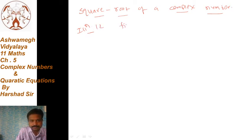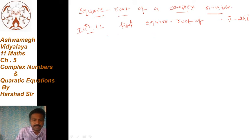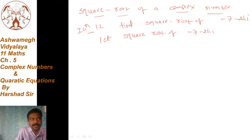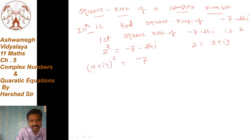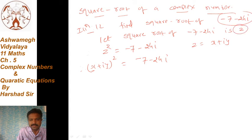Find the square root of (-7 - 24i). दोस्तों, let's consider: √(-7 - 24i) = z. तो इसका मतलब होगा कि z² = -7 - 24i. What is z? Let's consider z is any complex number: z = x + iy. So here z is replaced by x + iy, जिसका हमें square लेना है equal to -7 - 24i.